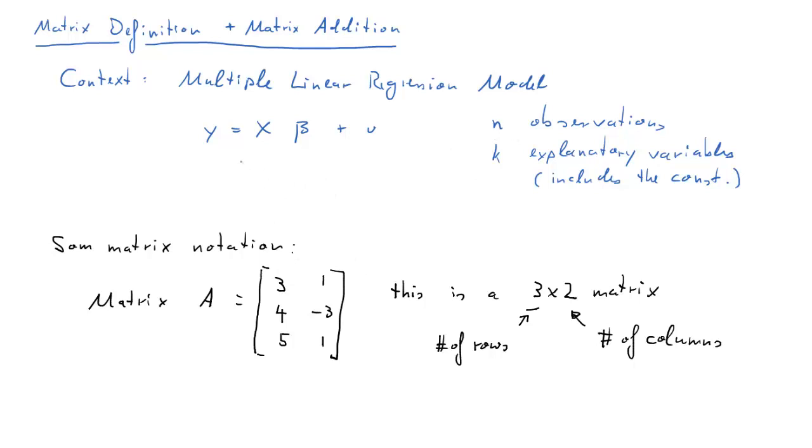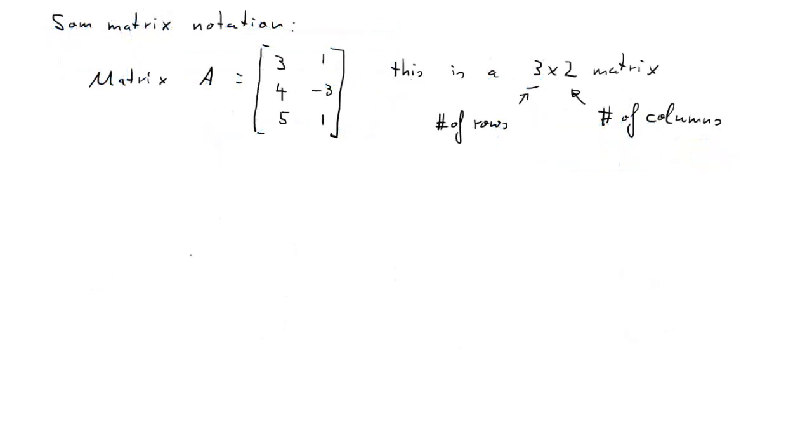With that bit of notation under our belt, we can go back to our model, and we know that y is an n by 1 matrix or vector, x is n by k, beta is k by 1, and u is n by 1.